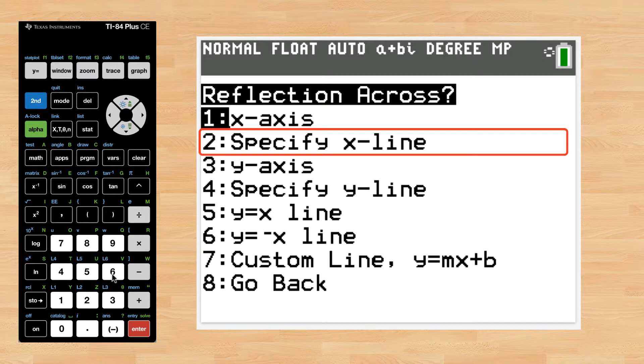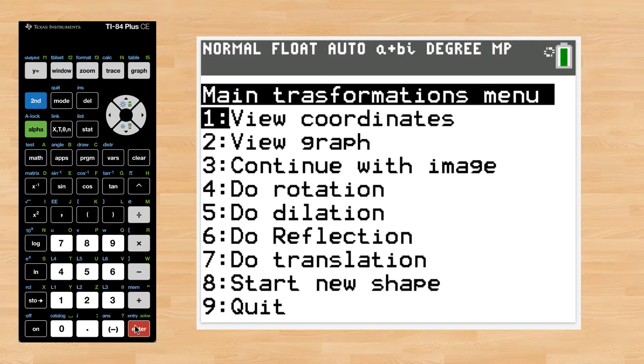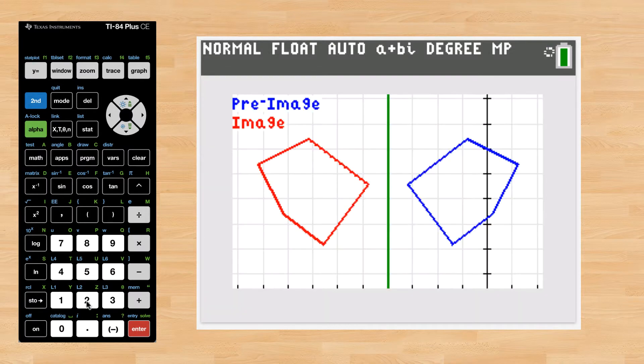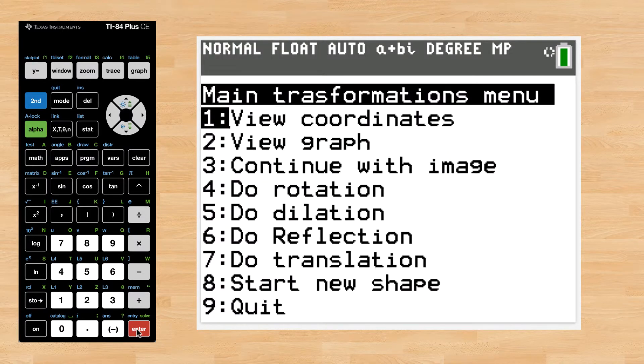Let's reflect across the line x = -4. And now let's view. There you have it. You can also see the coordinates.